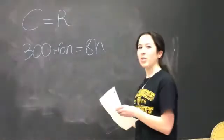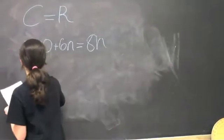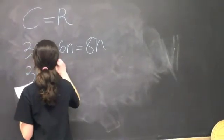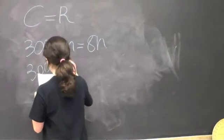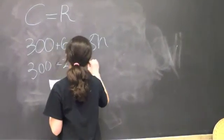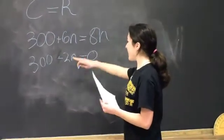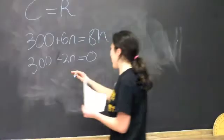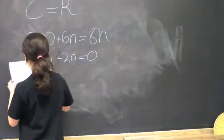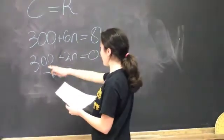And then from here, we're going to bring the 8N over to the opposite side. And then from here, we need to get rid of the N, so isolate for the N by bringing over 300 to the opposite side.